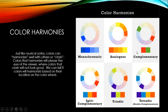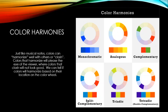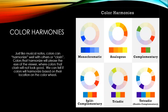Complementary colors are any color paired with the color directly across from it on the color wheel. They are visually striking and powerful combos. Any hue has a complementary — whatever is directly across the color wheel is its complementary pair.